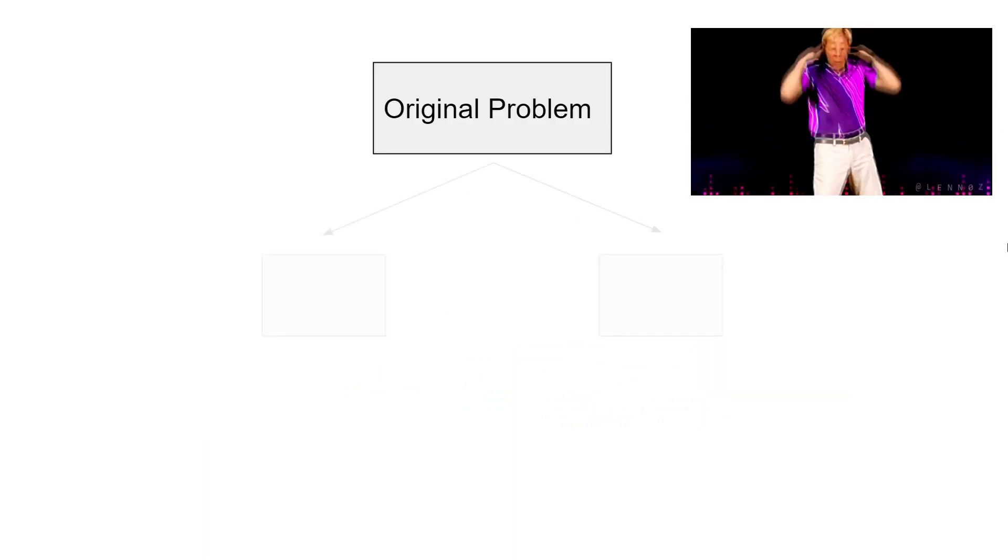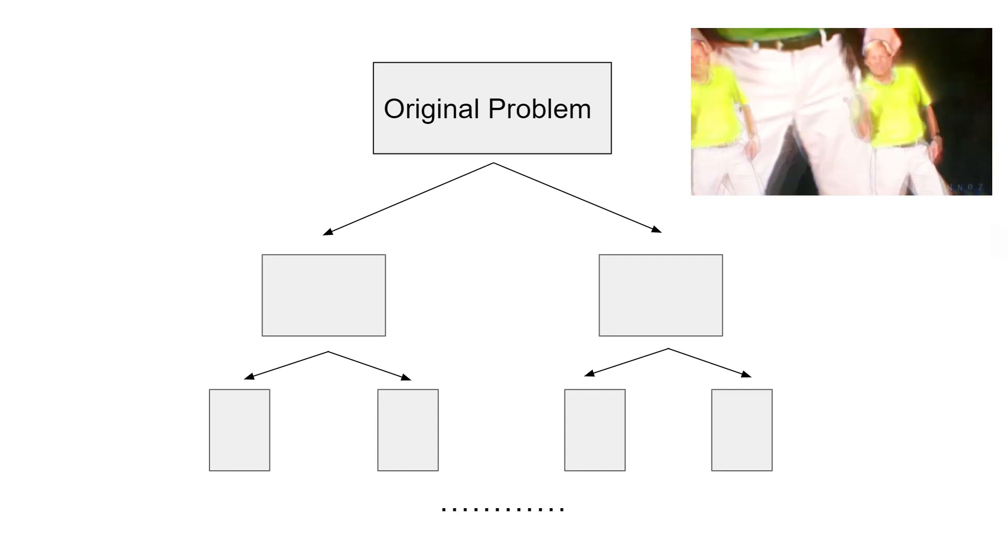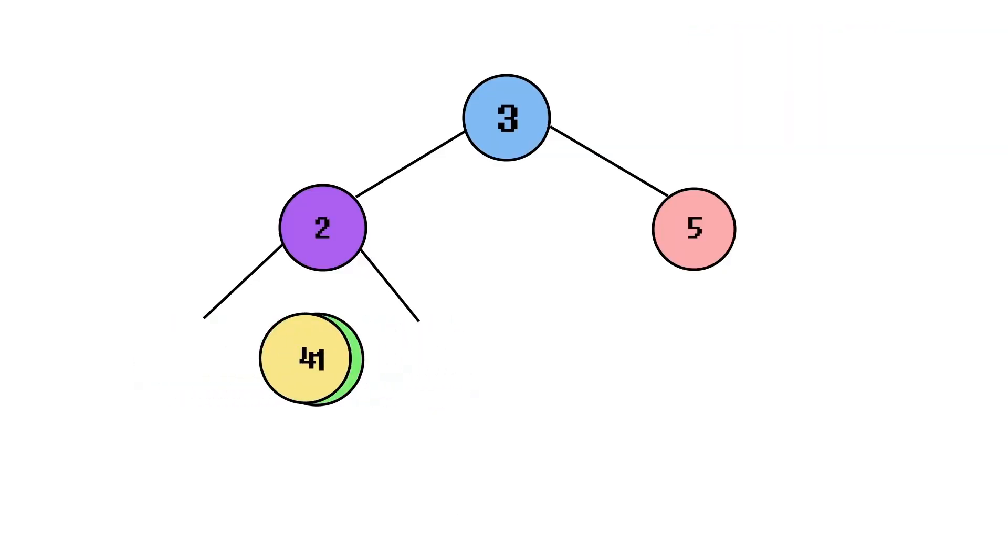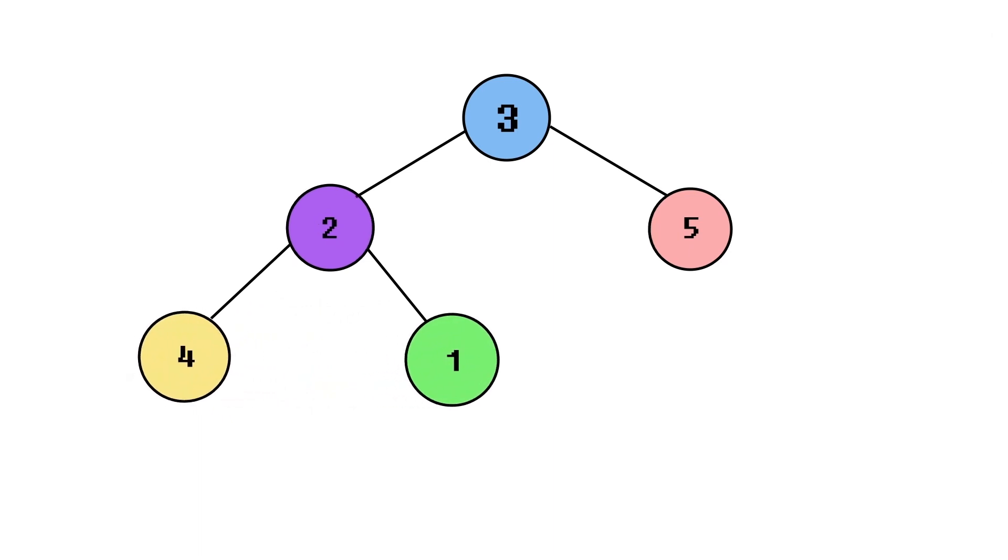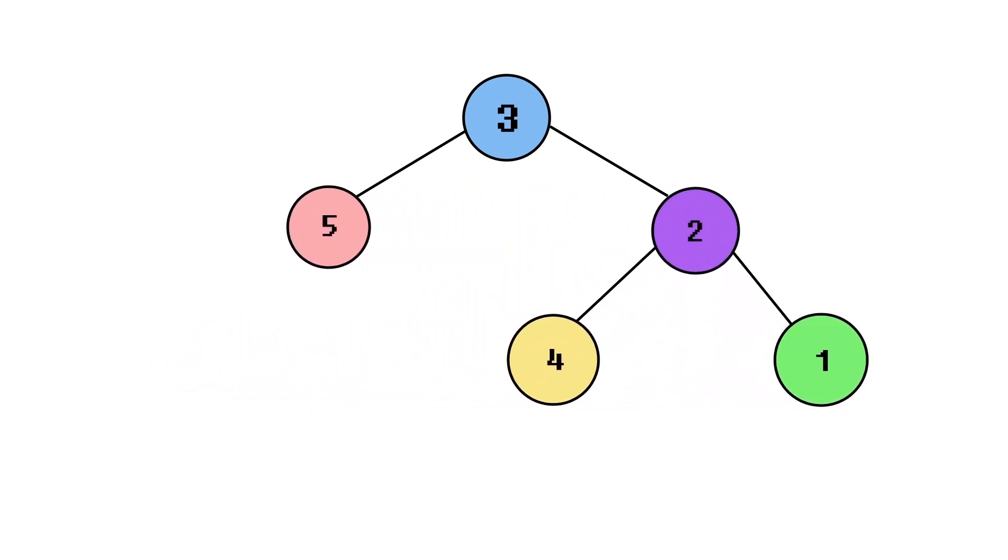The intuition behind this problem is to use recursion to break it down into similar sub-problems with a smaller input. A key observation we can make is that inverting a binary tree is the same as inverting the left subtree and the right subtree, and then swapping their positions.